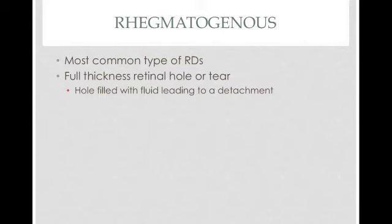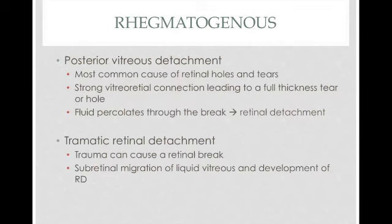Rhegmatogenous detachments are the most common type. There is a hole or a tear, and that hole creates a space behind the retina where fluid can accumulate. The two most common causes are posterior vitreous detachment, where the vitreous pulls on the retina causing a tear and then fluid migrates behind the retina, and traumatic retinal detachment, where trauma causes the tear followed by the same fluid accumulation.